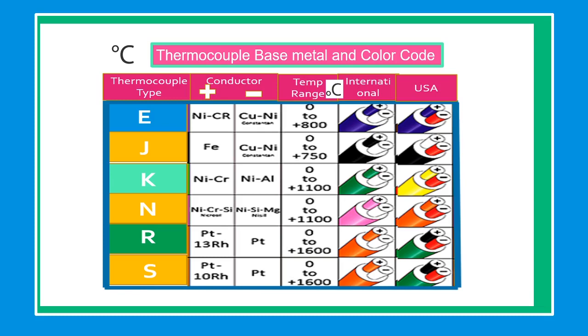Type J, a thermocouple having iron as their positive leg with constantan as the negative leg.